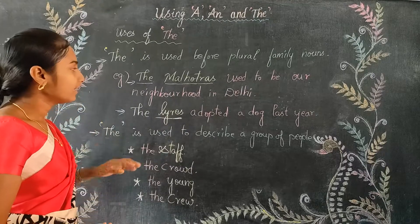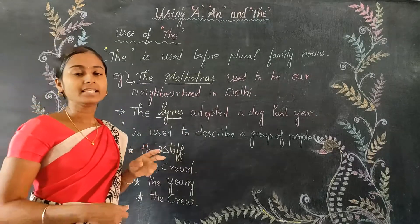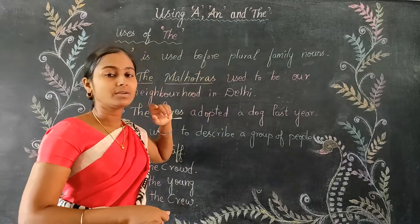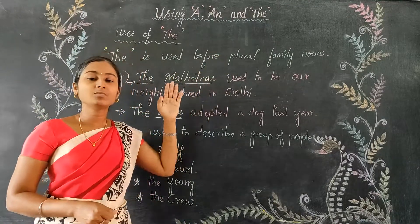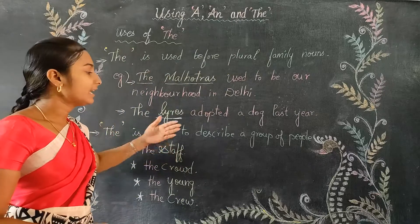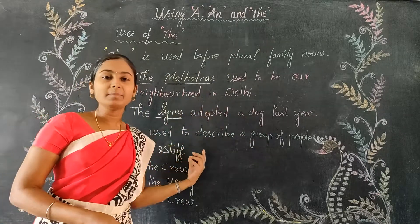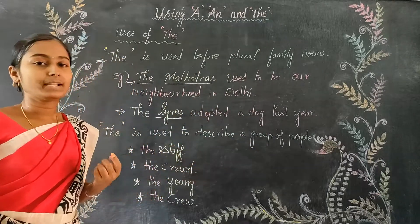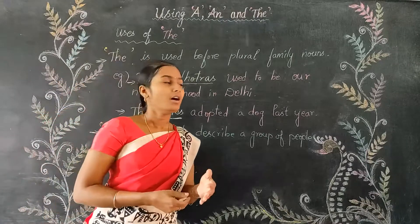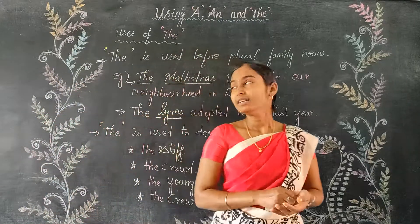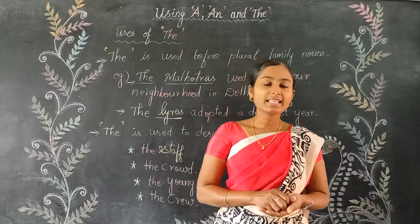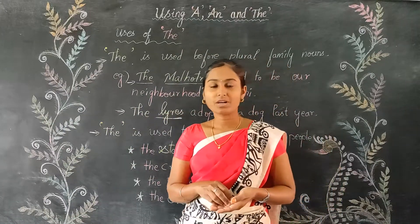We are using 'the' in two places: one is before a group of family names — plural family nouns — and the other is to describe a group of people. These are the two ways we can use 'the'. I hope you all understand. If you have any doubt, you can ask me. Thank you for watching.